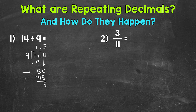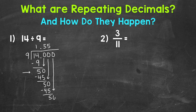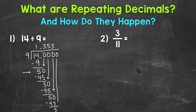So we need to continue on. We can use another zero — bring that down. And we have 50 divided by 9 again, which is 5. 5 times 9 is 45. Subtract, we get 5. We can use another zero, bring it down, and we have 50 divided by 9 again — which is 5. 5 times 9 is 45. Subtract, we get 5. We can use another zero, and that pattern is going to continue on forever.